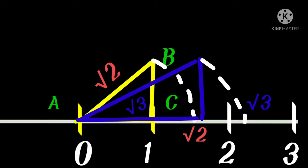You can go on and on and plot any square root on the number line this way. Instead of separate triangles, we can also make a spiral — using the √2 line already drawn, we form √3 from there, and the spiral keeps going, giving successive square roots.